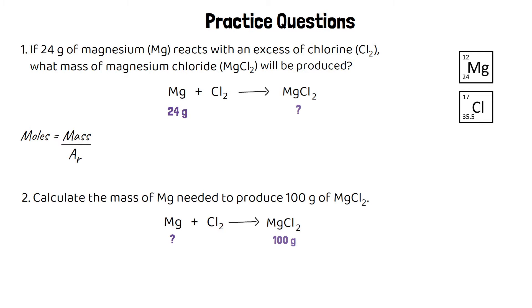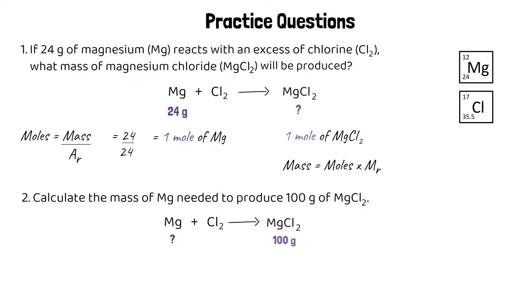For the first question, work out the number of moles of magnesium using moles equals mass over atomic mass. The mass is 24 and the atomic mass of magnesium is 24, so we have 1 mole of magnesium. If we start with 1 mole of magnesium, we're going to make 1 mole of magnesium chloride. We multiply 1 mole by the relative formula mass of 95, which means we're going to make 95 grams of magnesium chloride. Starting with 24 grams of magnesium, we can make up to 95 grams of magnesium chloride.